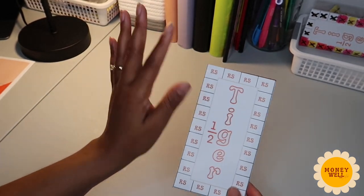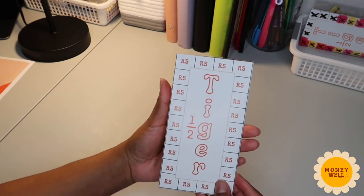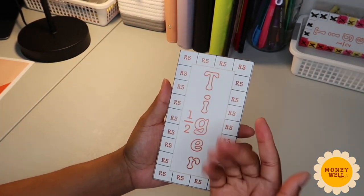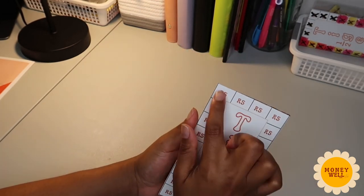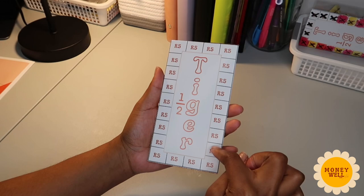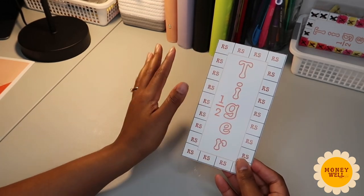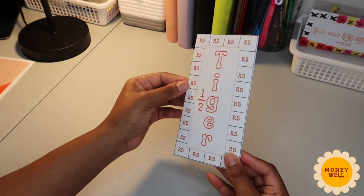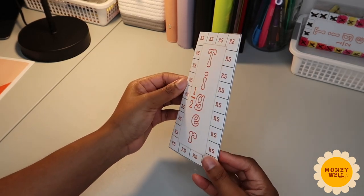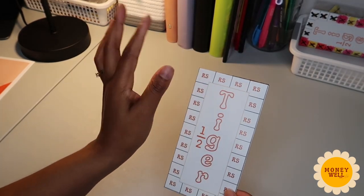So before I tell you how the challenge works, you can use the spaces to write down your goals, you can color in the tiger, you can color in or cross out every time you put money in. It's all up to you, you can be creative, customize it however you want.